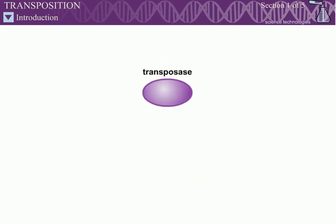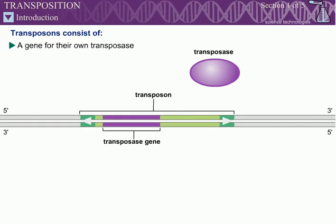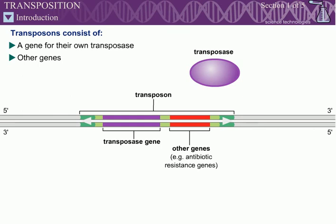The recombinases responsible for transposition are usually called transposases. Transposons carry a gene encoding their own transposase. Transposons may carry a few additional genes as well. For example, many bacterial transposons carry genes for antibiotic resistance.